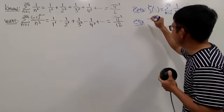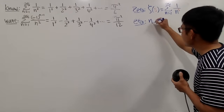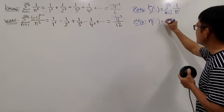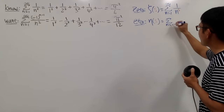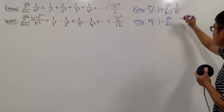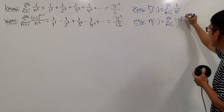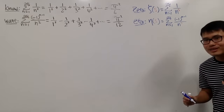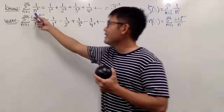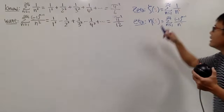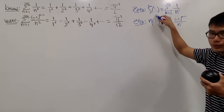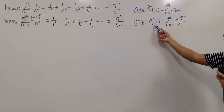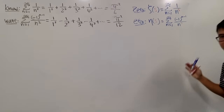Eta, spelled E-T-A. The eta function, eta of s, is just the sum where n goes from 1 to infinity, and it's the alternating version: negative 1 raised to the n minus 1 power, over n to the s power. You can see that the p-series is just theta of 2 — when s is equal to 2 — and the alternating series is eta when s equals 2 inside the eta function.